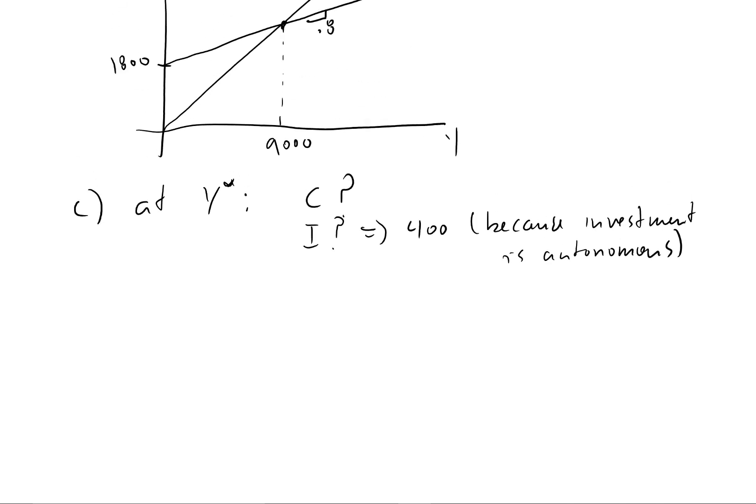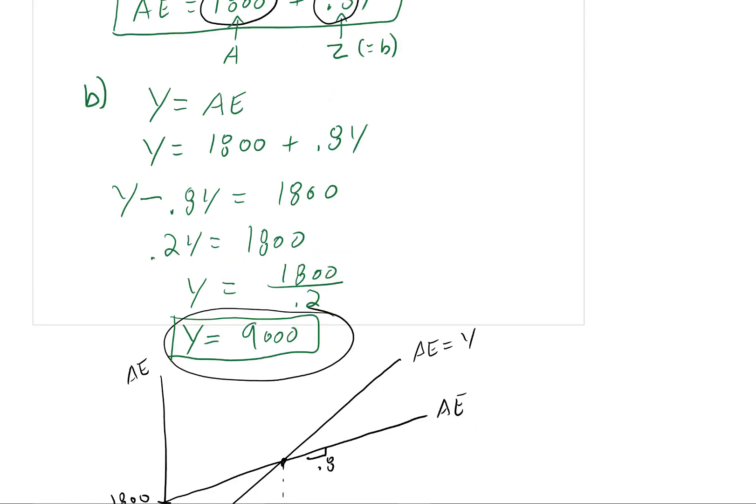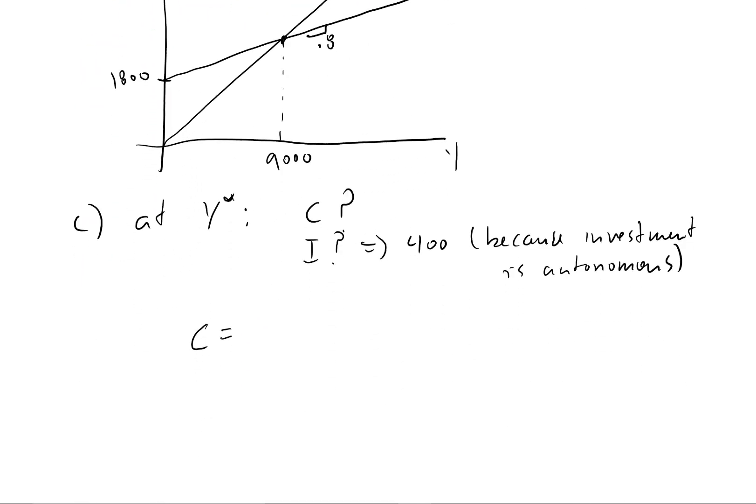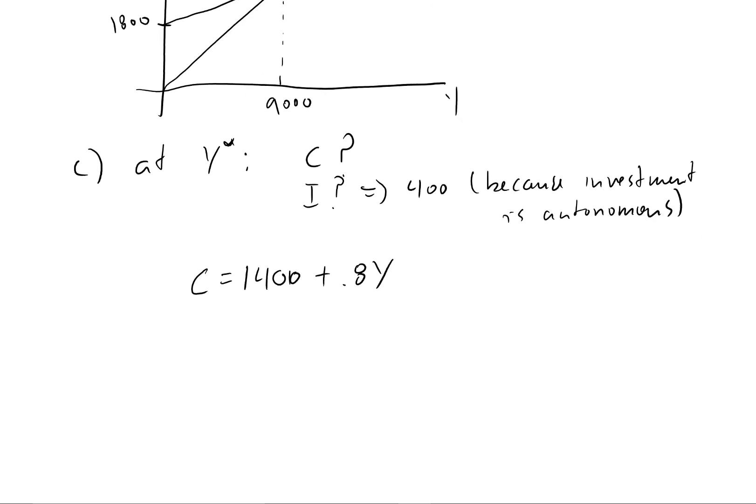Now what about consumption? We know, remember what our consumption function looks like. We'll just have to go back up to remind myself, 1,400 plus 0.8 times Y. So it equals 1,400 plus 0.8 times Y. There's a couple different ways you can figure this out, but this is I think the easiest way.